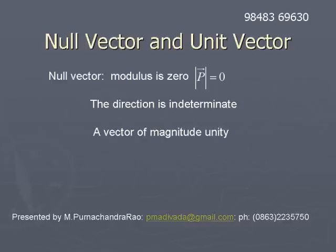Unit vector: a vector having a magnitude of 1 is known as a unit vector. If the magnitude of a vector is unity, it is called a unit vector.